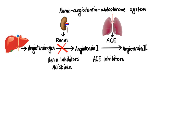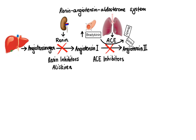Just like inhibition of renin, inhibition of angiotensin-converting enzyme also leads to decreased production of angiotensin-2. However, what makes ACE inhibitors different is that in addition to lowering angiotensin-2 levels, they can also elevate bradykinin levels. Bradykinin is a peptide that causes blood vessels to dilate by stimulating the release of nitric oxide and prostacyclin. Normally, angiotensin-converting enzyme inactivates bradykinin, so its inhibition leads to bradykinin-induced vasodilation.